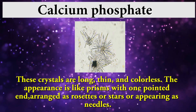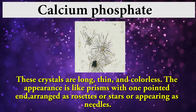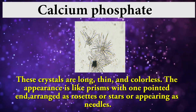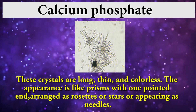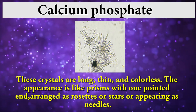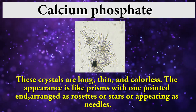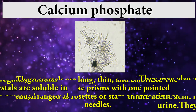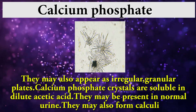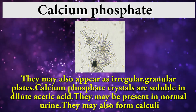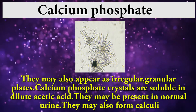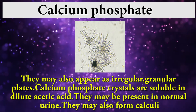Calcium phosphate crystals are long, thin, and colorless. Their appearance is like a prism with one pointed end, arranged as a rosette or star shape, or appearing as needles. They may also appear as irregular granular plates. Calcium phosphate crystals are soluble in dilute acetic acid and may be present in normal urine.